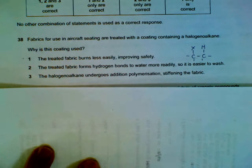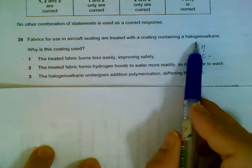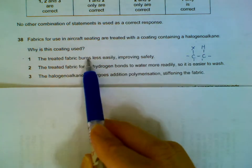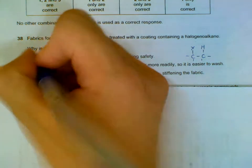Question 38: Using halogen alkanes, possibly CFCs and all that, why do we coat it on the aircraft seating? Well, the CFCs don't catch fire easily, so they will be safer in case there's a fire breakout.